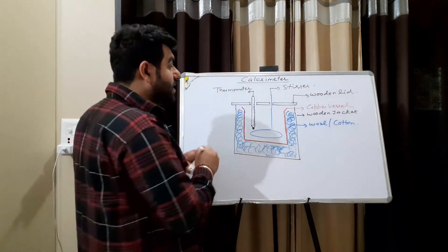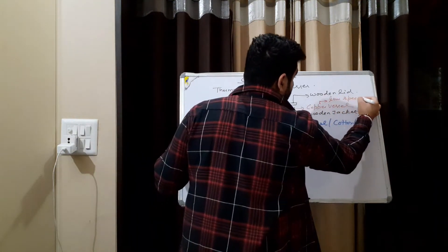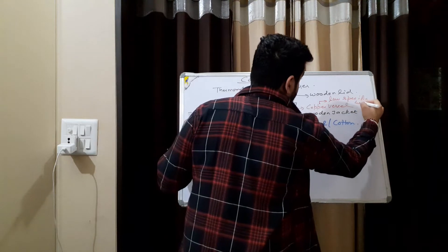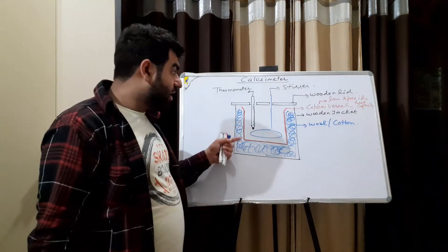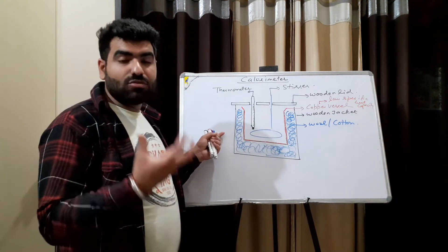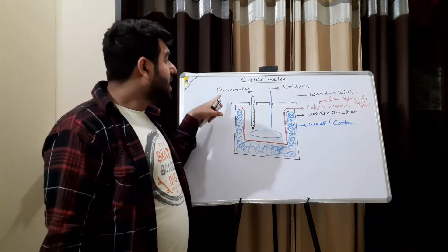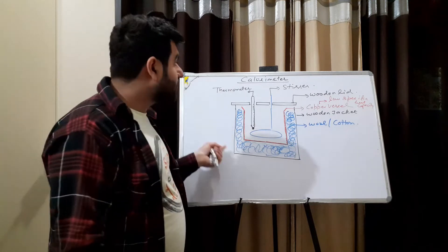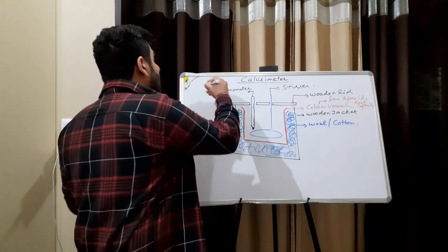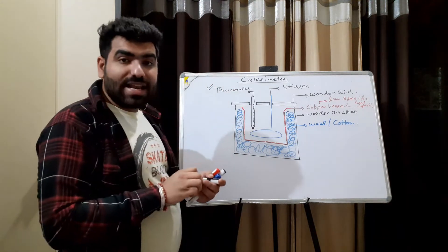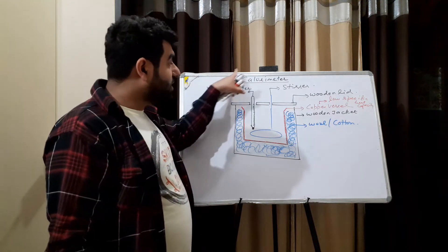Now, why are we using a copper vessel? The copper vessel has a very low value of specific heat capacity. With a very low specific heat capacity, it will not take much time to change its temperature. The faster the process, the more accurate the readings we get. The thermometer will play a very vital role in telling us the temperatures before as well as after the heat exchange.